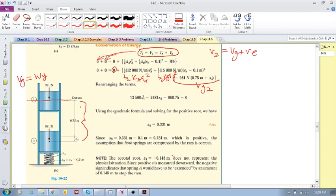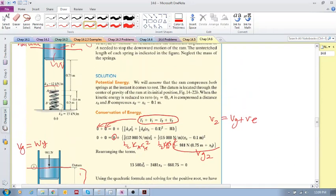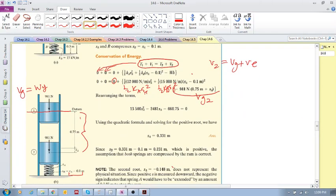...0.1 or 100 millimeters less than sa, because sa will be compressed 100 millimeters and then only will B start to be compressed. So the total amount that A is compressed will always be 0.1 meters more. This is sb, which is sa minus 0.1.